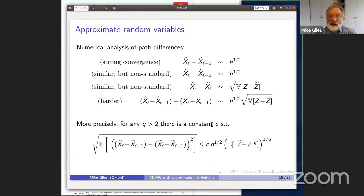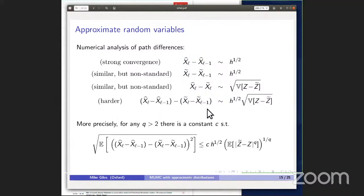For numerical analysis, I don't have time to go through the detail, but we were able to fully analyze this. We have the usual strong convergence results: for the paths using true normals, the difference between the coarse and fine path is of the order of the square root of the time step. The same is true for the approximate paths using the approximate normals. It's a slightly non-standard analysis, but you would expect that to carry through. Also for paths on the same level, the difference between using the true normals and the approximate normals scales like the square root of the variance of the difference between the true normals and approximate normals.